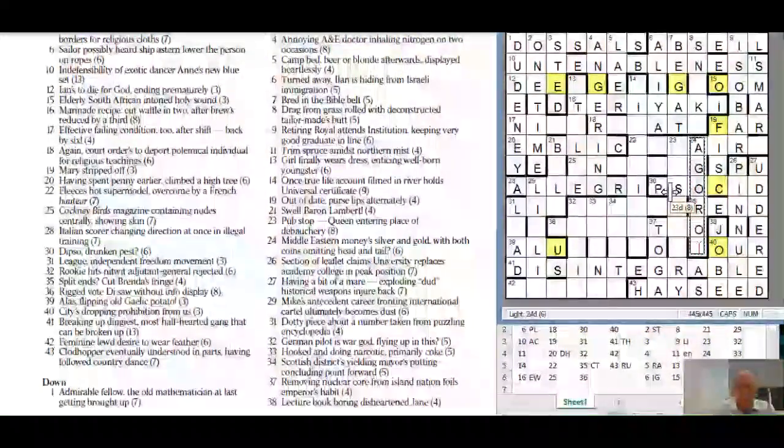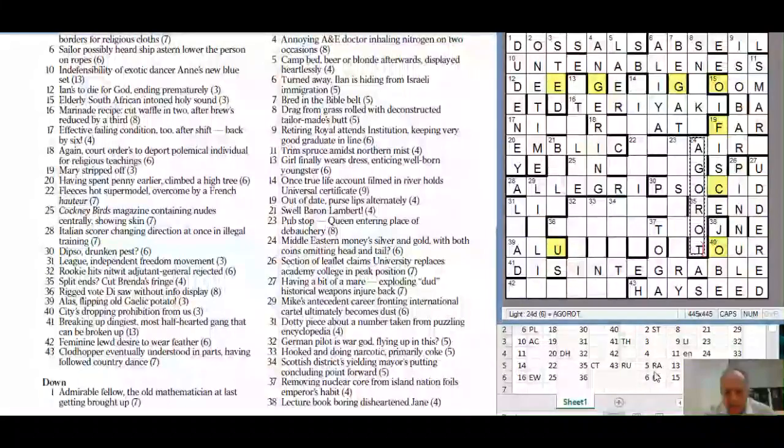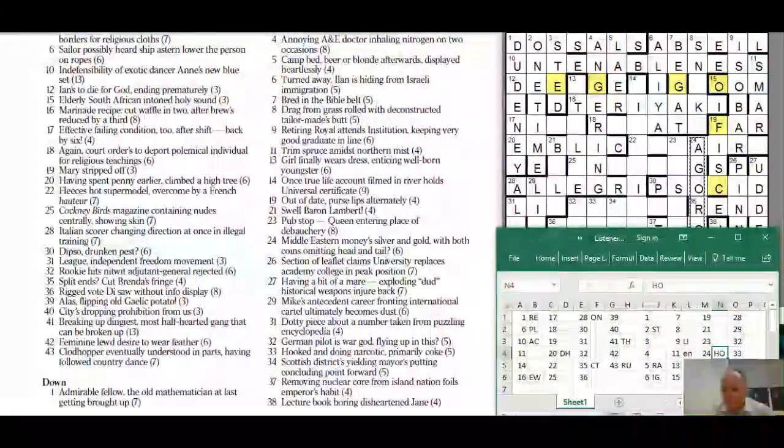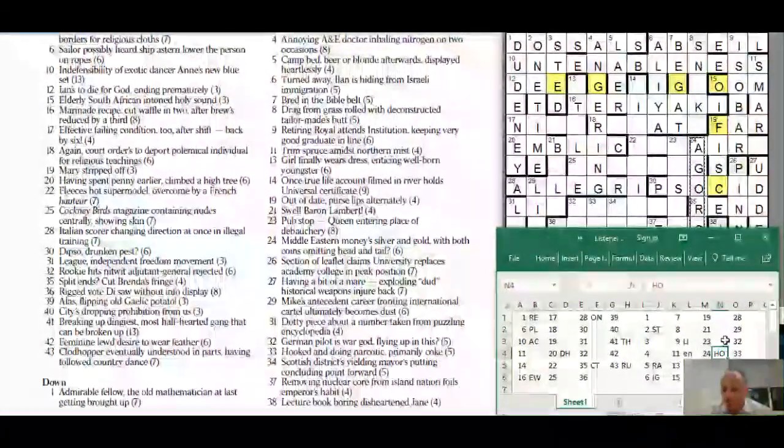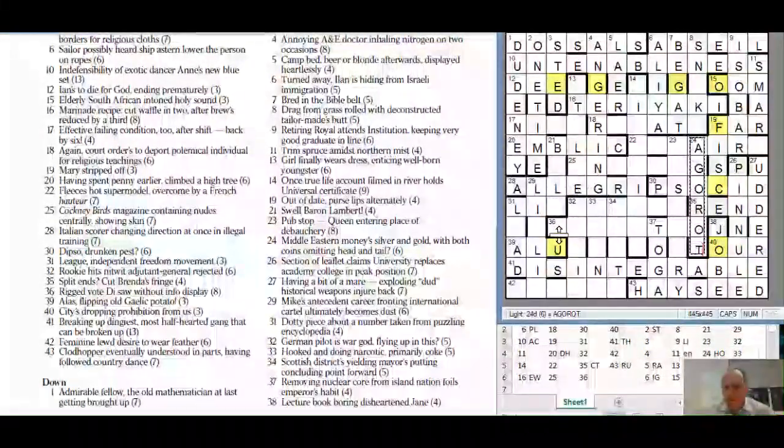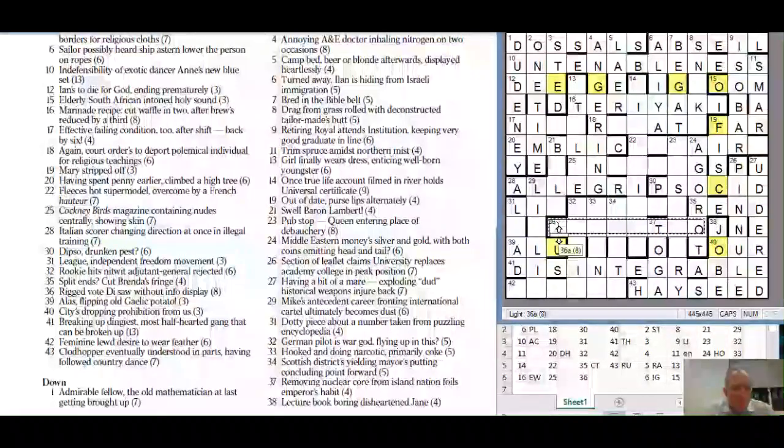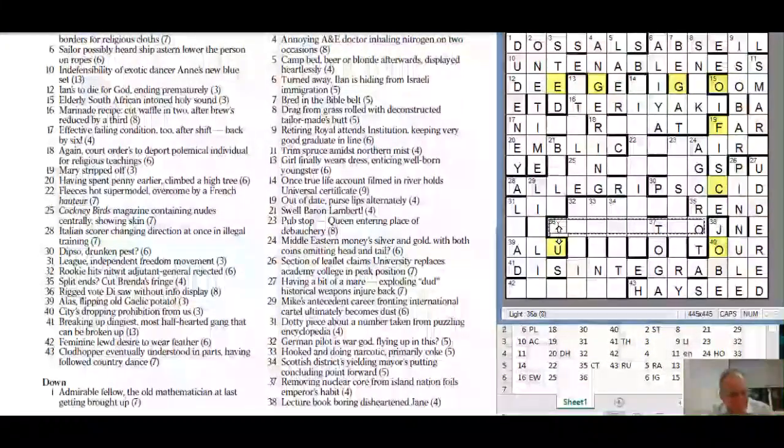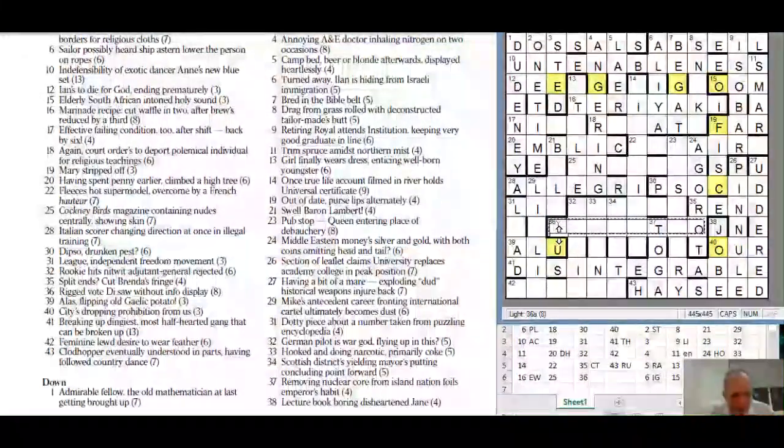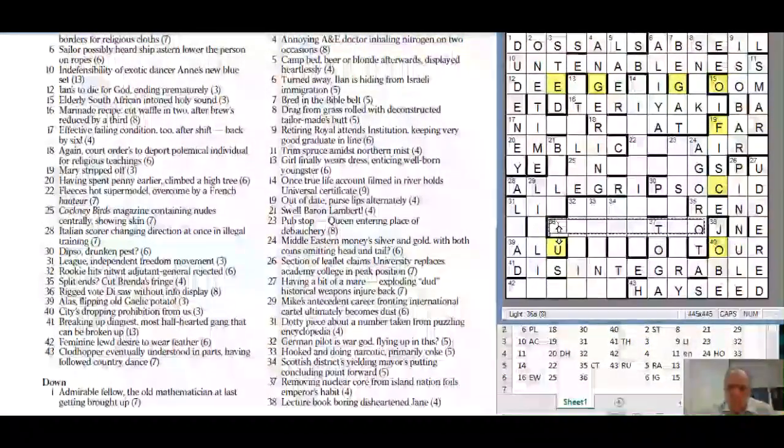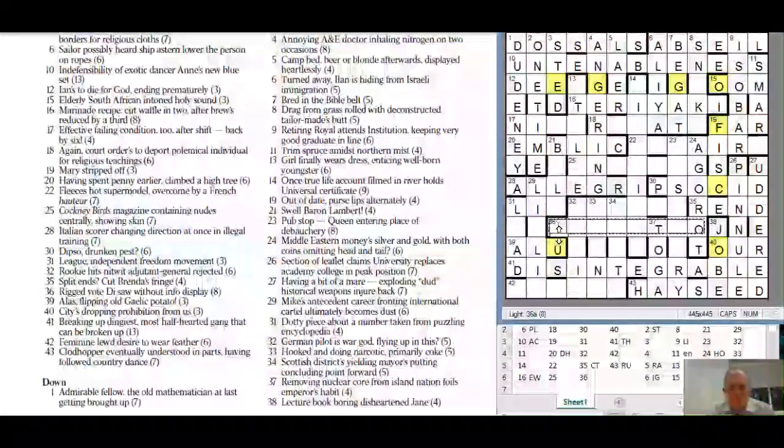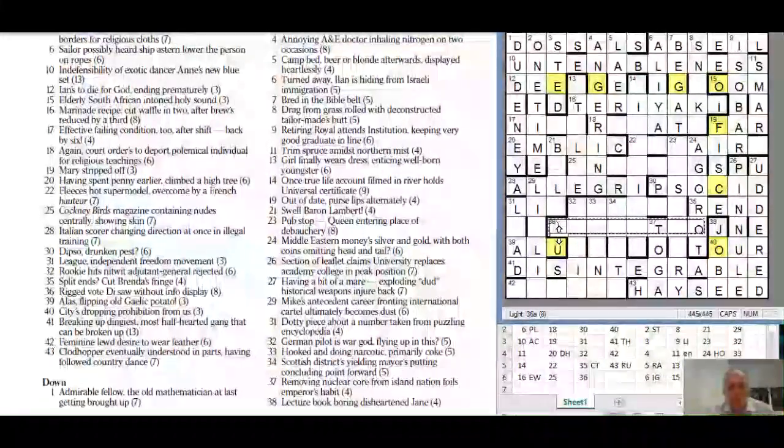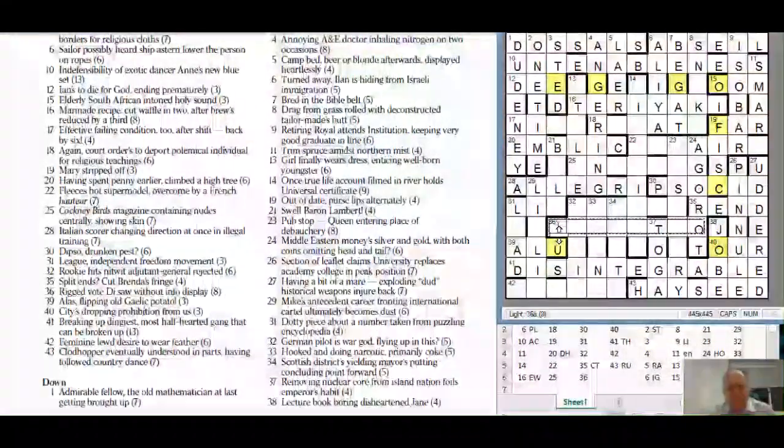Thirty five cross ending in N-D: split ends cut Brenda's fringe. Could that be rend from the middle of split ends which can mean split. If you cut Brenda's fringe off - ends is the extra word. Twenty four down: Middle Eastern money - silver and gold ag and or with both emitting head and tail so coins is the extra word. Agorot is the money.